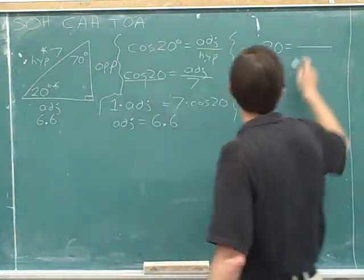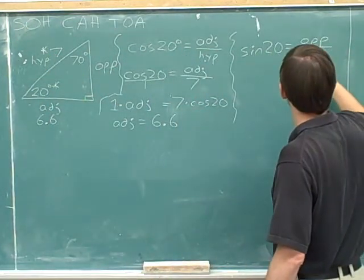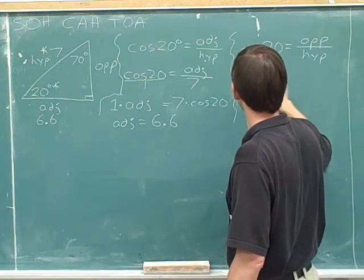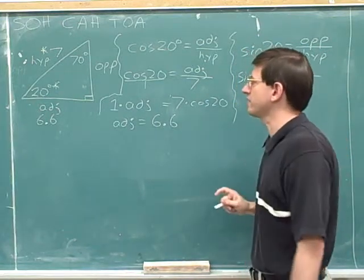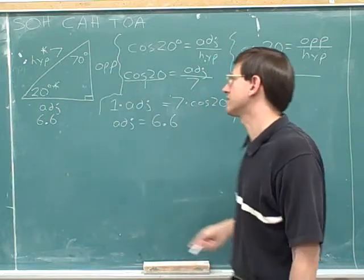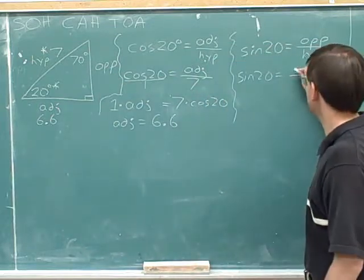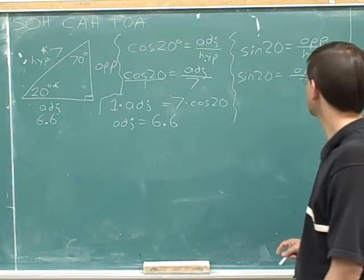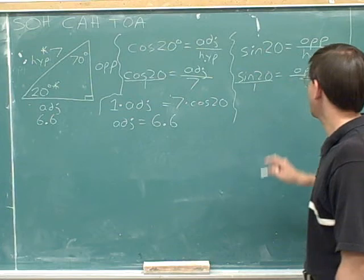So, sine is opposite over hypotenuse. What do I plug in for the opposite side? Well, I don't know the opposite side. And what do I plug in for the hypotenuse? 7. Now we can use cross multiplication.